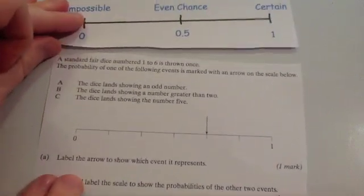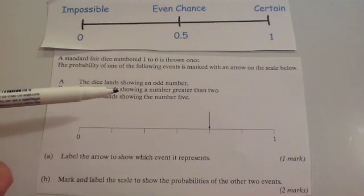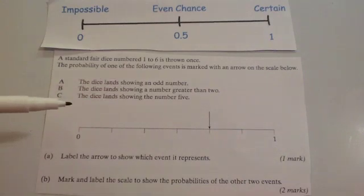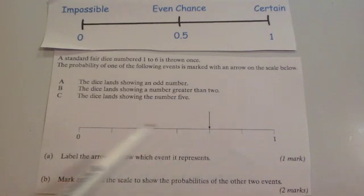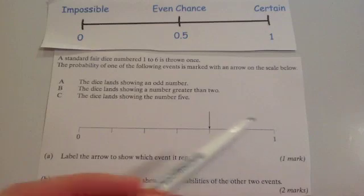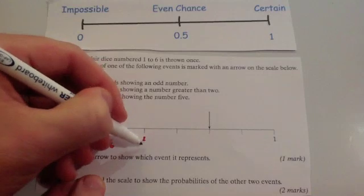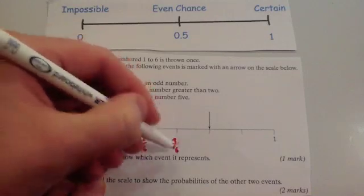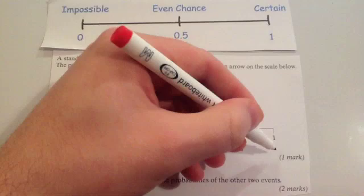Finally, a standard dice is thrown once. The probabilities are: A — lands on an odd number; B — lands on a number greater than 2; C — lands on the number 5. The scale is divided into sixths: 1 sixth, 2 sixths, 3 sixths (even chance), 4 sixths, 5 sixths, and 6 sixths (which is 1).